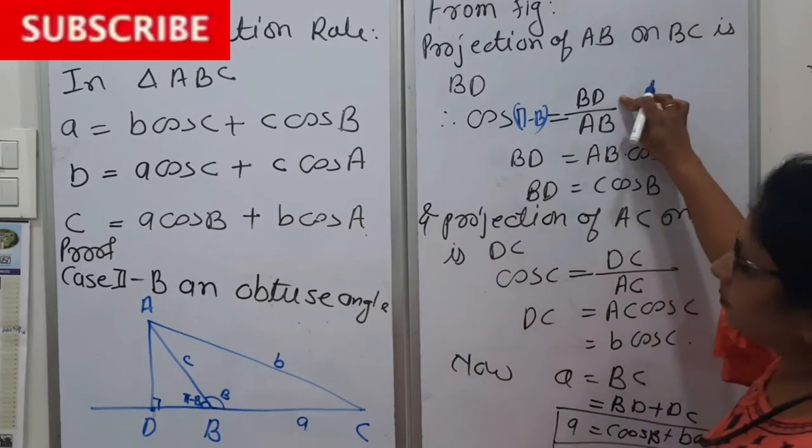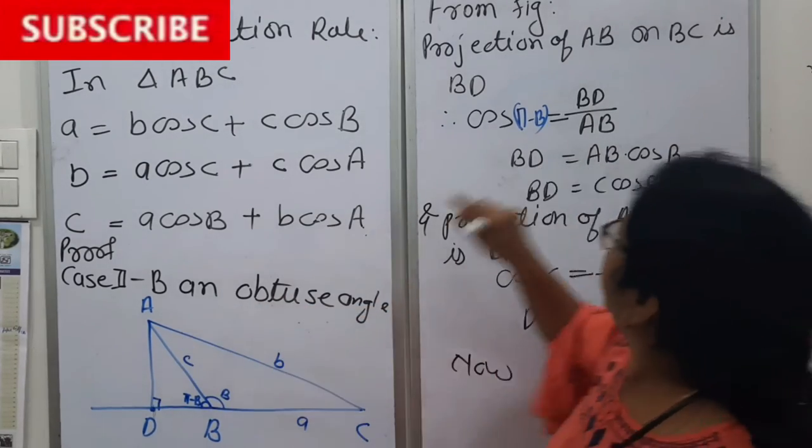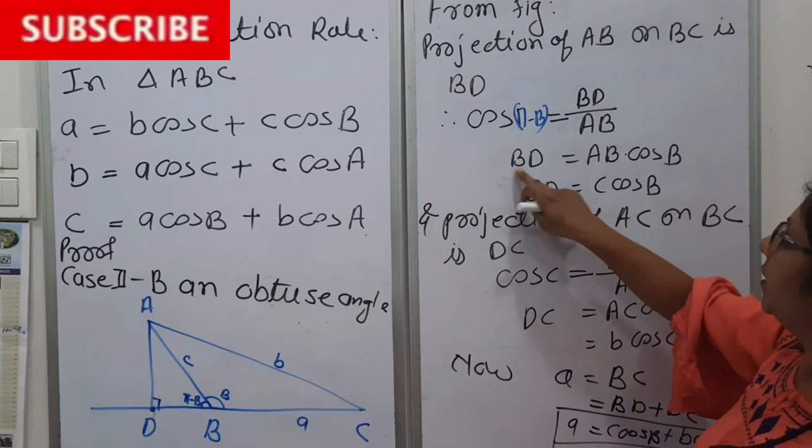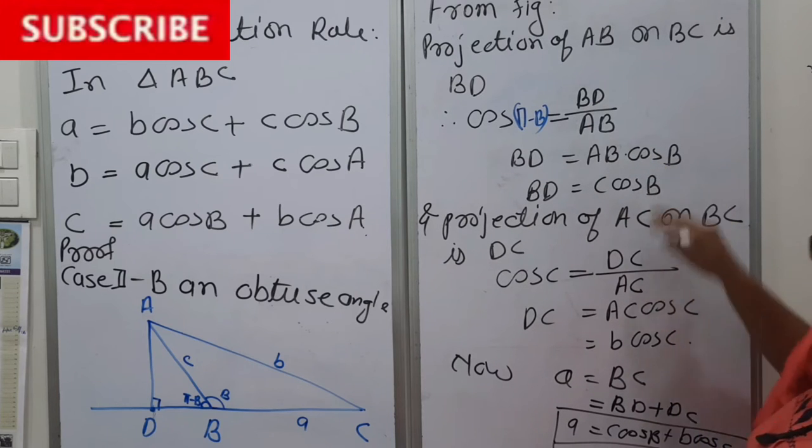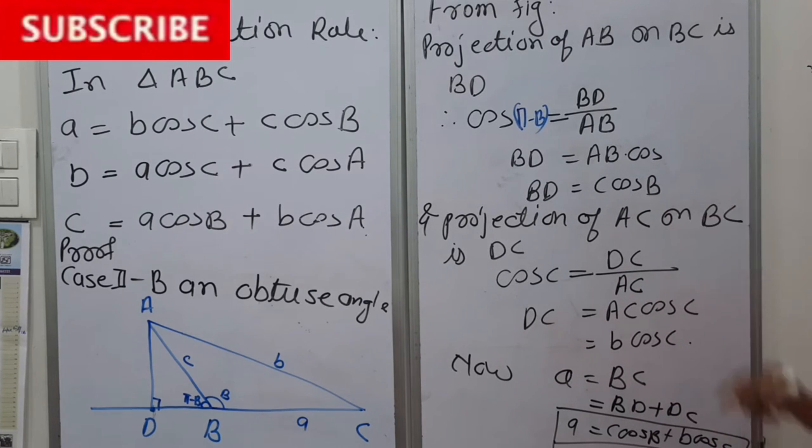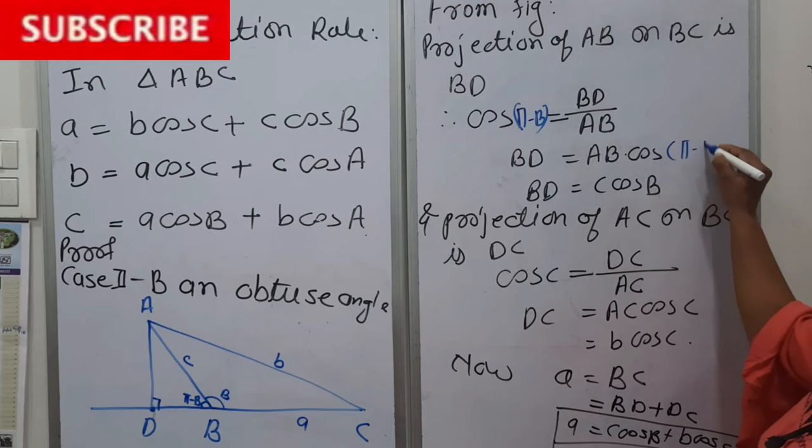Adjacent is DB, hypotenuse is AB. So BD is AB cos, instead of B we have to again write π minus B.